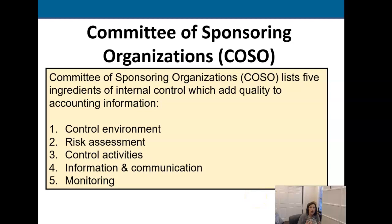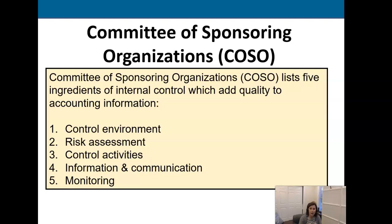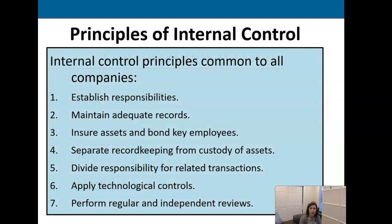Companies that are publicly traded are required to adhere to a framework of internal control. The easiest and most common framework for those companies to adopt is what's called COSO — the Committee of Sponsoring Organizations of the Treadway Commission. They've established five components: the control environment, risk assessment, control activities, information and communication, and monitoring. Those make up the components of internal control.